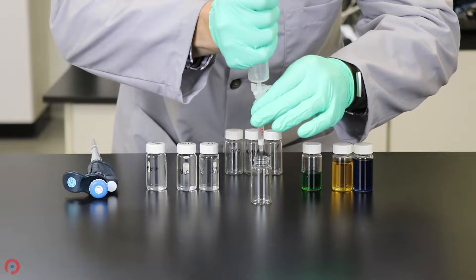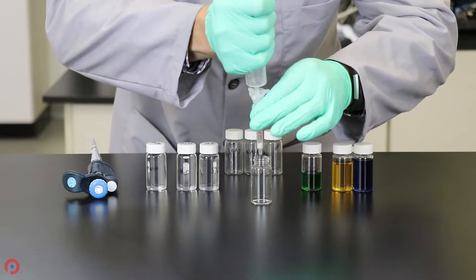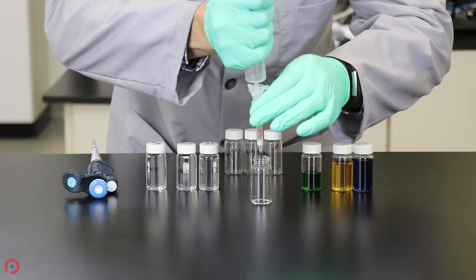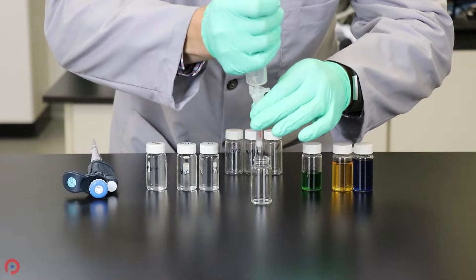I'm going to undershoot it by a little bit just to be safe. But you'll notice, what is five or six mils a minute? About five or six drops per second. That's a good way to estimate how fast your flow rate is when you're just looking at the SPE cartridges.